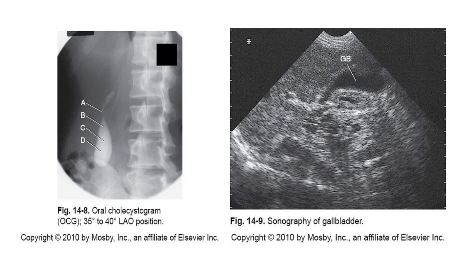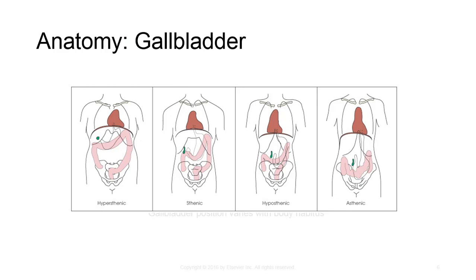We don't typically perform oral cholecystograms anymore with the advantages of CT, but the image on the left shows the gallbladder highlighted with contrast called bilopaque. Sonography of the gallbladder is still very common. As you can see, the location of the gallbladder can shift extensively as body habitus changes. In general, the larger the patient size, the more superior and lateral the gallbladder will be; the smaller the patient size, the more inferior and central it is.